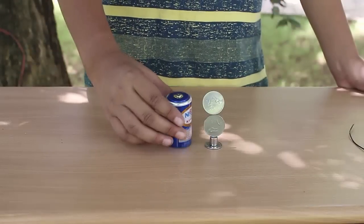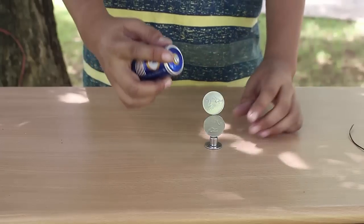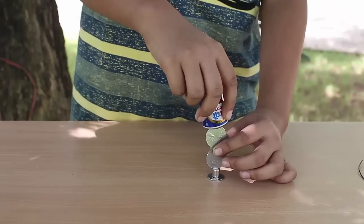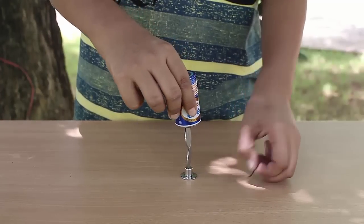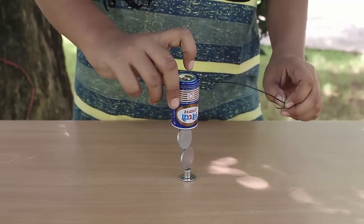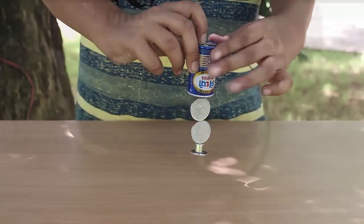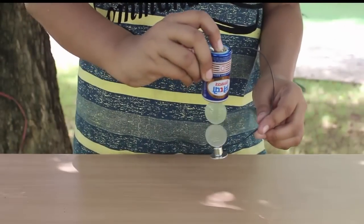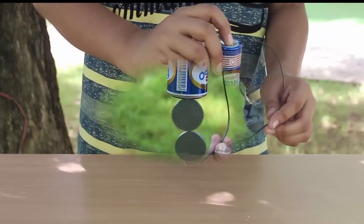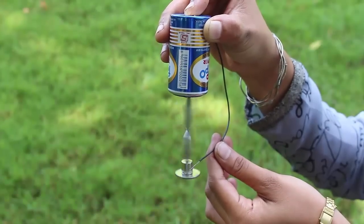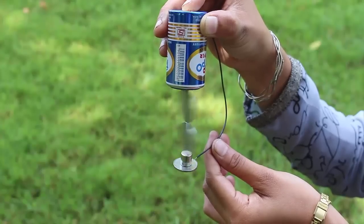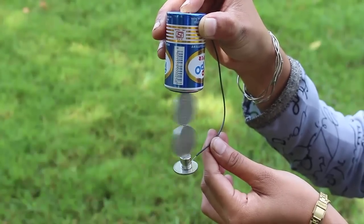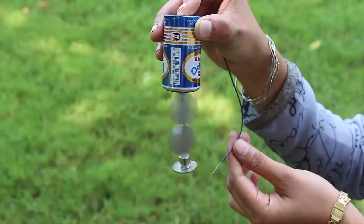Now this is the button part of the battery. Suspend the coins and the magnets by the button of the battery. Take a 20 cm long flexible electrical wire, place one end on the base of the battery and touch the other end of the wire to the rim of the neodymium magnet. This will complete the electrical circuit because the coins can conduct electricity.